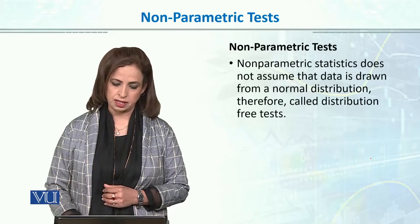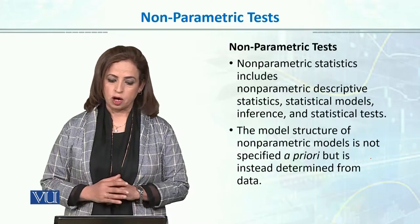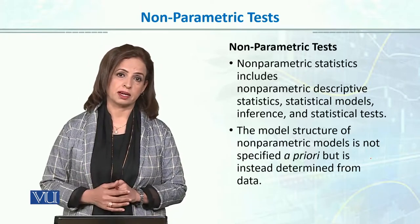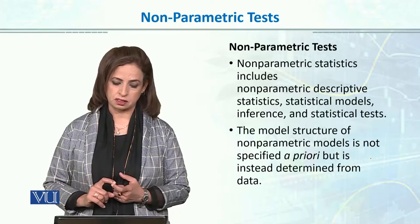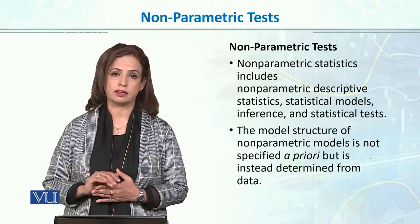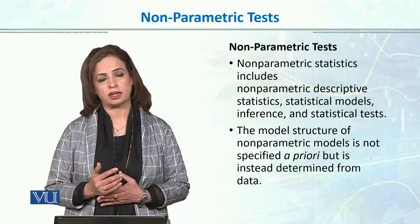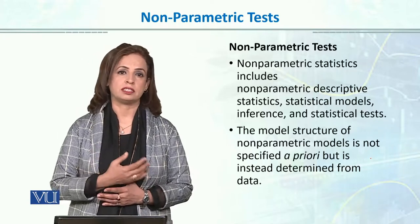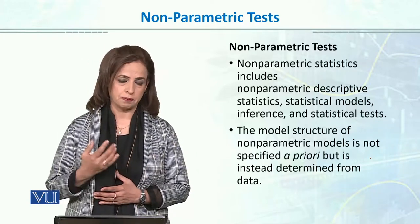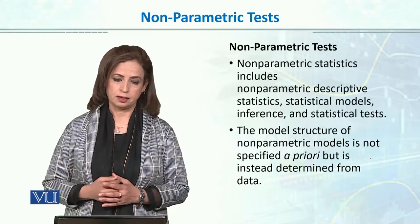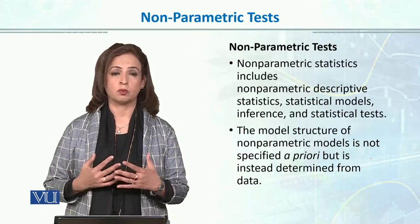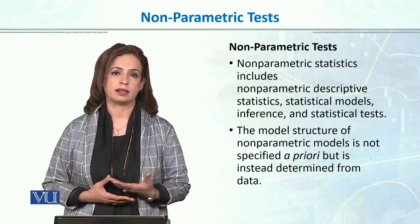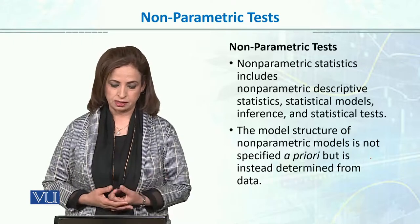Distribution-free test. Non-parametric statistics includes everything we do in parametric testing — we calculate descriptive statistics, we calculate statistical models, we draw inferences, and we calculate test values, just as we do in parametric testing with t, F, chi-square, or regression. However, the difference is that the model structure is not defined a priori; rather, our data tells us what the underlying distribution will look like.